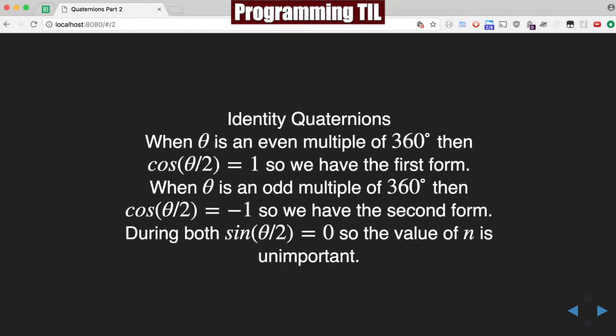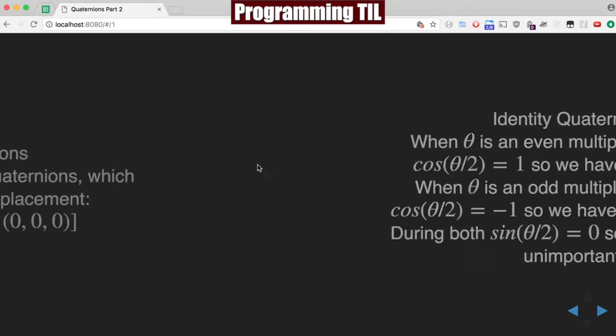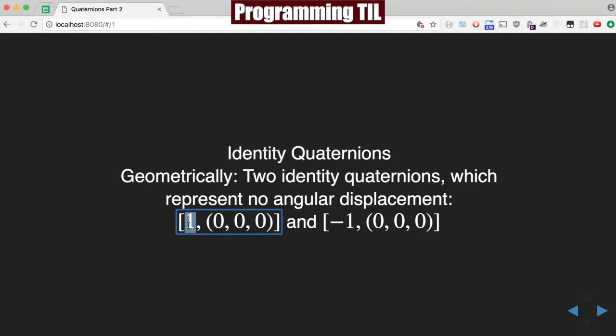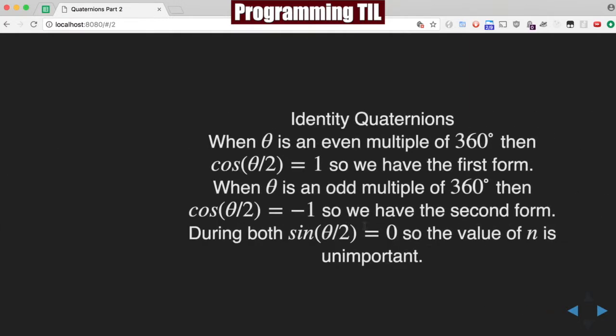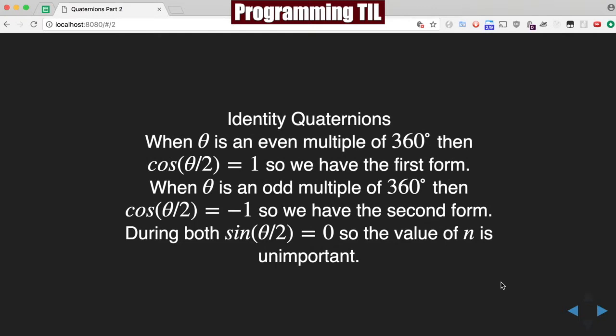So, when theta is an even multiple of 360, then cosine theta over 2 is equal to 1. So we have this number here when theta is an even multiple. When it's an odd multiple of 360, then it's negative 1, so we have the second form right here. And always, during both, sine of theta over 2 is going to be 0. So the value of n is unimportant in this, and we'll always have 0, 0, 0.